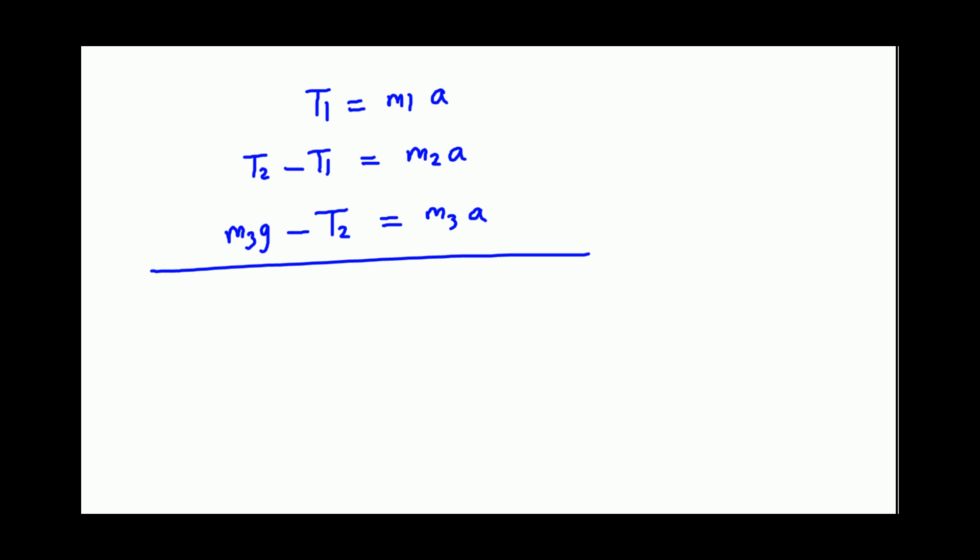Now you know where we are headed with this, correct? And so you have T1 plus T2 minus T1 plus M3g minus T2 equals M1a plus M2a plus M3a.